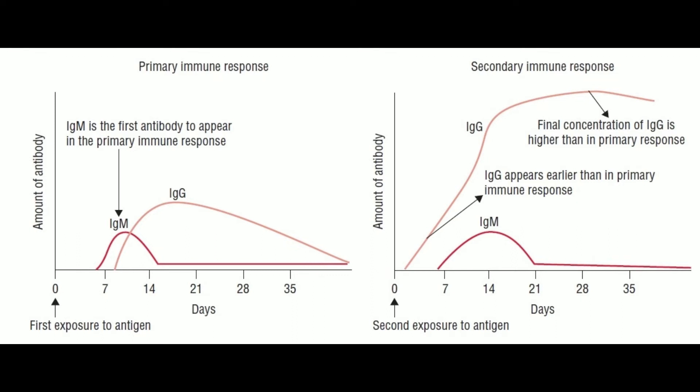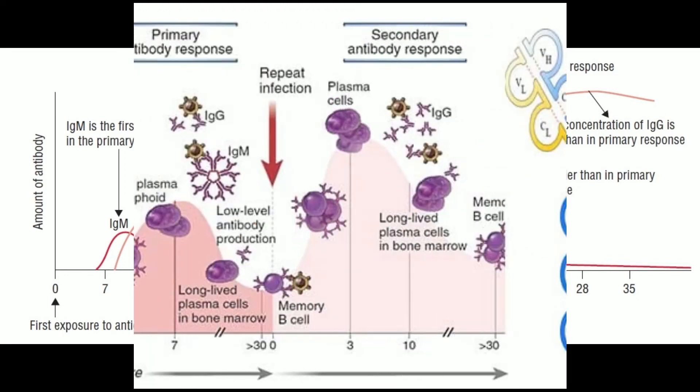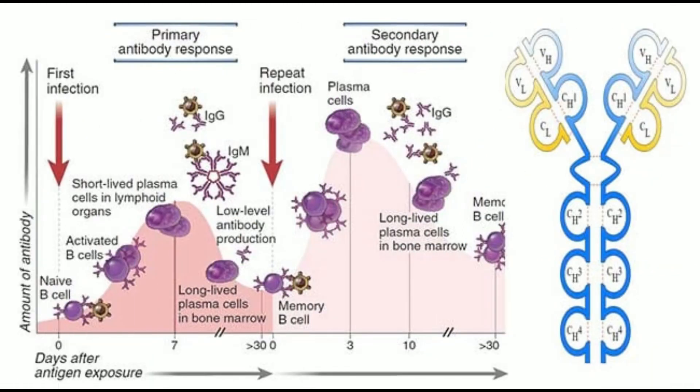Characteristic #5 - Affinity of Antibody: Primary immune response antibodies have low affinity to their antigens; secondary immune response antibodies have high affinity to their antigens. Characteristic #6 - Responding Cells: The primary response involves naive B-cells and T-cells, while the secondary response involves memory B-cells.